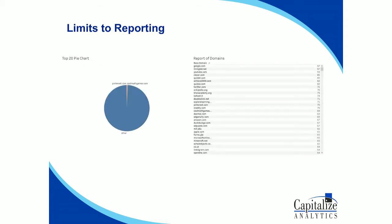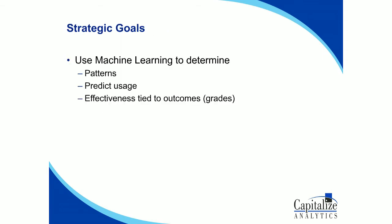A good example of this: for a particular class, here's a list of domains that students clicked on — here's the top 20. But if you look at the pie chart, the top 20 is just a little sliver and everything else is 'other.' When we did a count on this, we were well over 100,000 different base domains clicked. So anything with google.com counts as one domain, even though there are virtually unlimited Google subdomains and sub-pages you could go to.